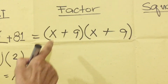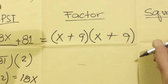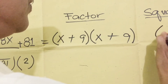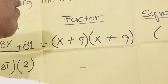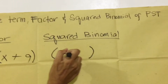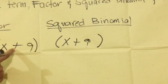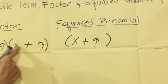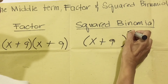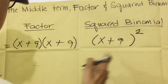Since we have the same binomials, the squared form uses parentheses — copy the binomial x plus 9, and count how many: x plus 9, x plus 9 — that's 1 and 2, so the exponent is 2. It becomes the squared binomial (x + 9)².